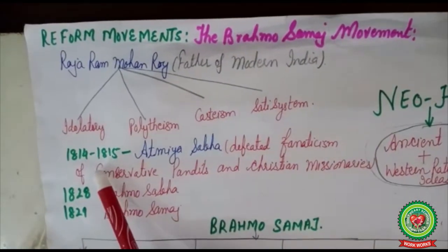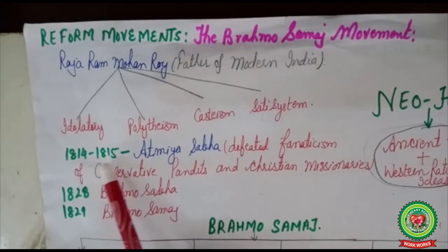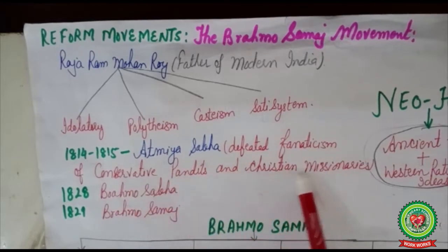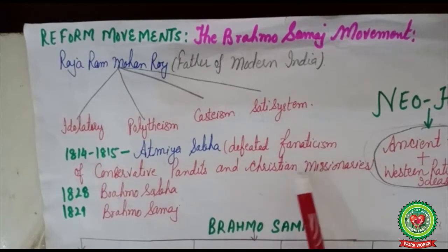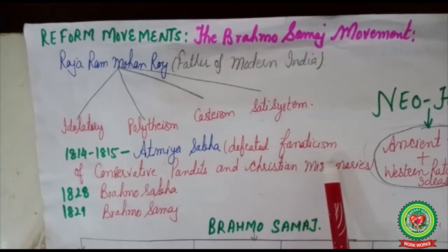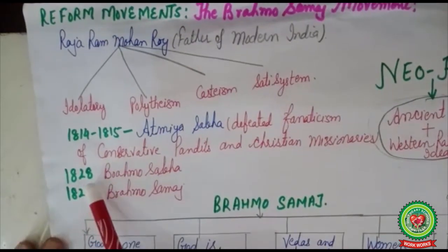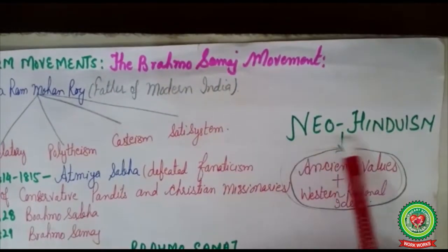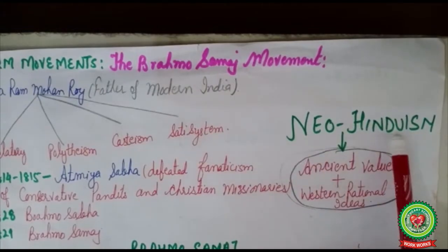To bring reforms in India, Raja Ram Mohan Roy in 1814–1815 set up Atmiya Sabha, where he defeated the fanaticism of conservative pundits and Christian missionaries — those who believed their religion alone was supreme and all others were bad. He told them that all religions treat human beings equally and are basically the same. In 1828 he set up Brahmo Sabha, which in 1829 came to be known as Brahmo Samaj.